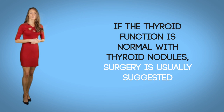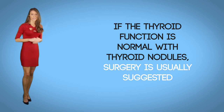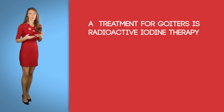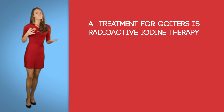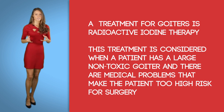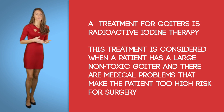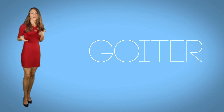For thyroid nodules, if thyroid function is abnormally high or low, the treatments described previously apply. If thyroid function is normal with nodules, there are no good medications to shrink them and surgery is usually suggested if necessary. A treatment for goiters is radioactive iodine therapy, used commonly in Europe and South America but not yet common in the United States. This treatment is considered when the patient has a large non-toxic goiter and medical problems make them too high risk for surgery.